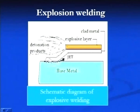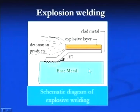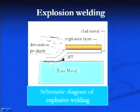Explosion welding is another process in which explosive material is placed on the top surface of one component. The explosive is detonated, producing very high velocity in that component, which leads to its collision with the other component. When one component collides with the other at very high velocity, localized deformation at the interface takes place and that localized deformation produces a composite kind of material at the interface, producing the joint.